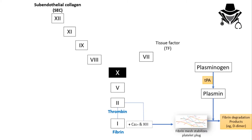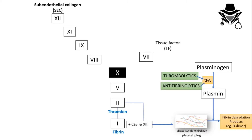tPA is very important: whenever we convert plasminogen to plasmin, we destroy the thrombus, which can be used for managing diseases like ischemic stroke. We have drugs that work on tPA: thrombolytics activate tPA, and antifibrinolytics stop and inhibit tPA.